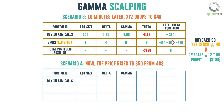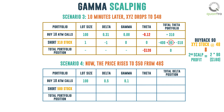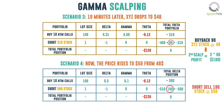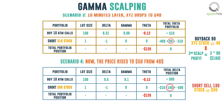Scenario 4: Now the price rises to $50 from $48. The Delta goes back to 0.5 and the Gamma to 0.1. To maintain a Delta hedge position, you need to be short on a total of 500 stocks. Hence, you short sell 190 more shares of XYZ at $50. Now you have made room for future scalps.